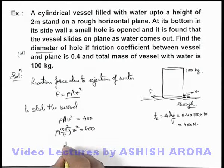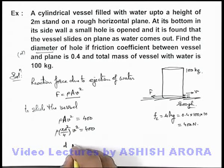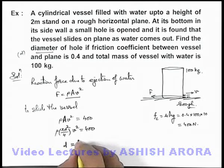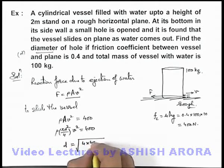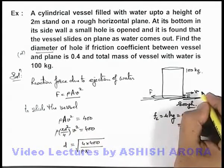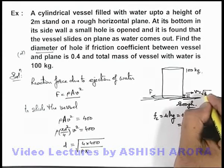On simplifying I'll be getting the diameter of hole is equal to under the root of 4 multiplied by 400 divided by ρπv². And the efflux velocity v I can write as √(2gh), so v² I can write as 2gh.